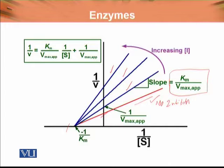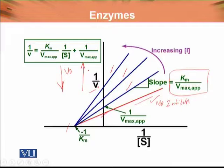So this is 1 over V0 on this side. The velocity, represented as 1 over V0, is decreasing as non-competitive inhibitor is added.